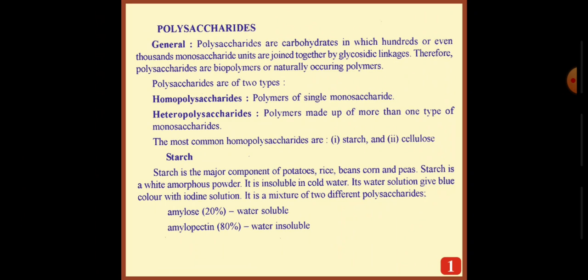Therefore, polysaccharides are biopolymers and naturally occurring polymers. Polysaccharides are of two types. Homopolysaccharides are polymers of single monosaccharides, while heteropolysaccharides are polymers made up of more than one type of monosaccharides.